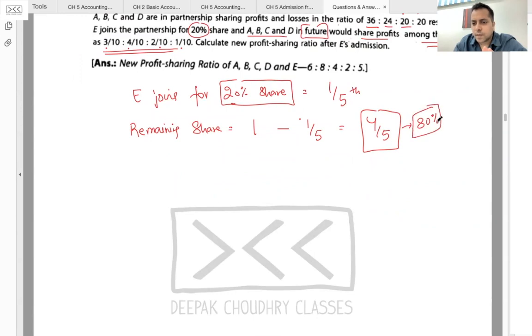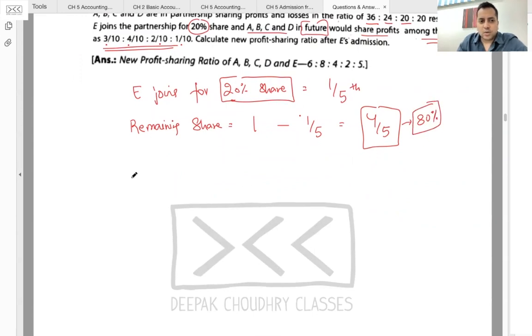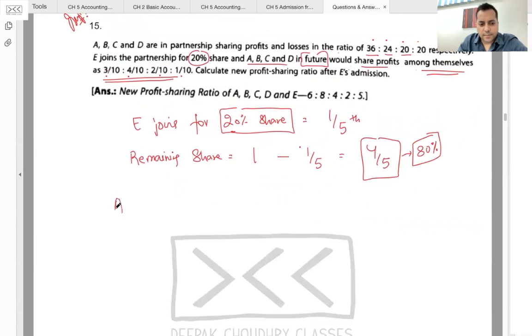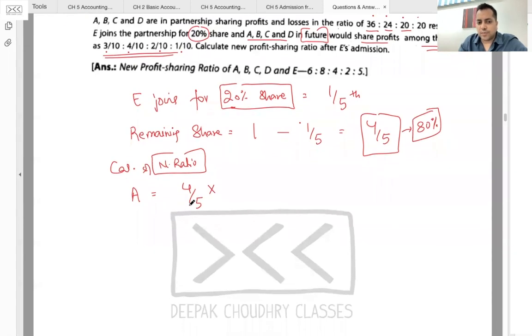Now A ko kya milega? 3:4:2:1 ke ratio mein baat rahe hain. A will get three-tenth. B will get four-fifth ka four by ten.